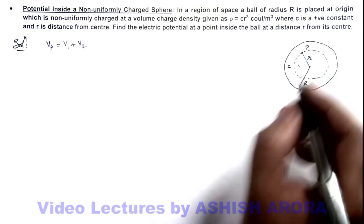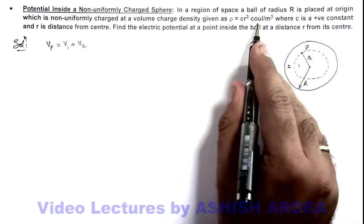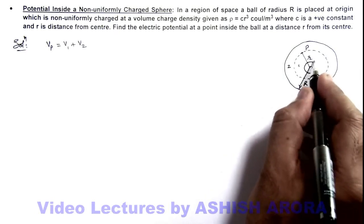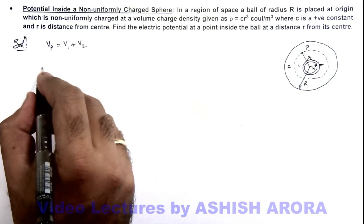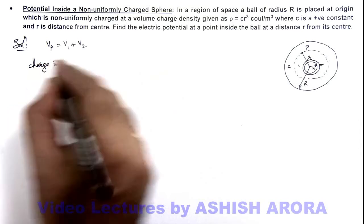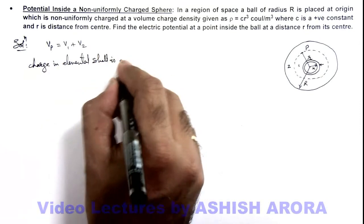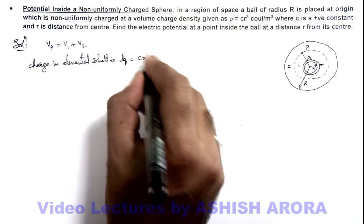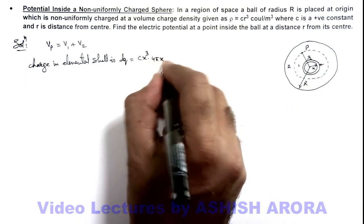For the inner sphere, within which the charge is non-uniformly distributed, we calculate the charge by considering a shell of width dx and radius x. In this region, the charge within the elemental shell is dq = ρ · (volume of elemental shell) = cx³ · 4πx² dx.